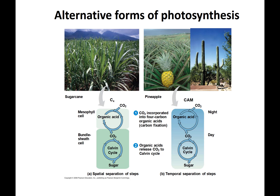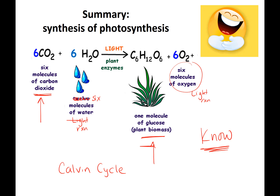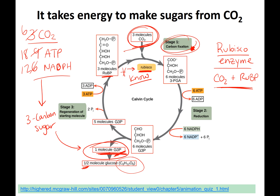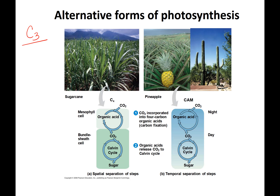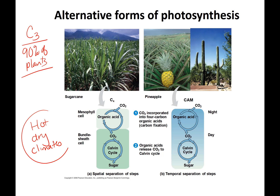What we just covered is called C3 photosynthesis, because carbon dioxide is fixed into a three-carbon molecule. This works for about 90% of plants. But if you're in a hot, dry condition and constantly opening and closing your stomata, you're going to lose water. Since water is essential for photosynthesis, becoming dehydrated lowers your photosynthesis output. So some plants have evolved adaptations to hot, dry climates.